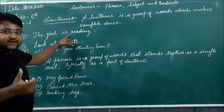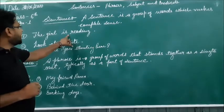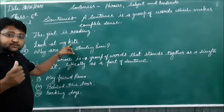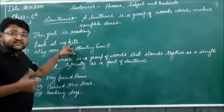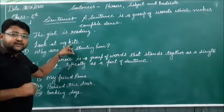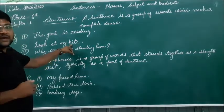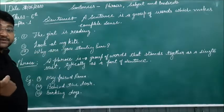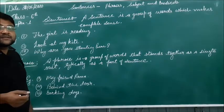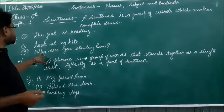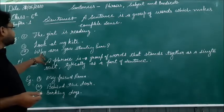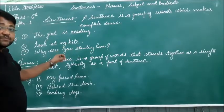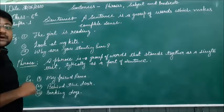That's why it is a sentence. The second sentence is 'Look at my kite.' The second sentence also gives a complete meaning, that's why it is also a sentence. But if it doesn't give complete meaning, that is not a sentence. The third is 'Why are you standing here?' — that is an interrogative sentence, but it is also a sentence.